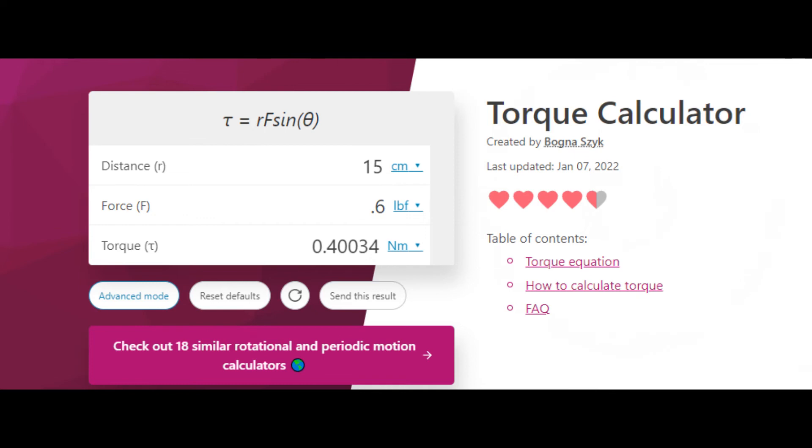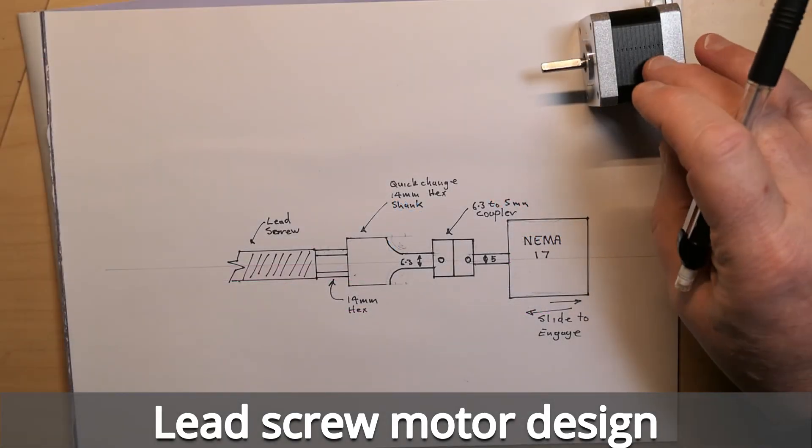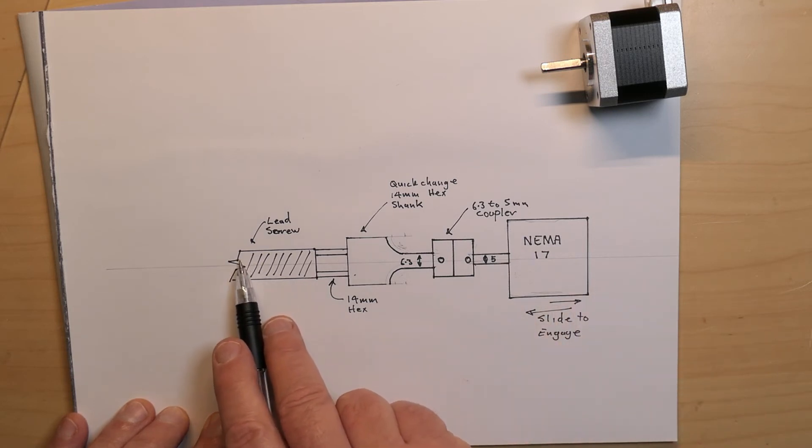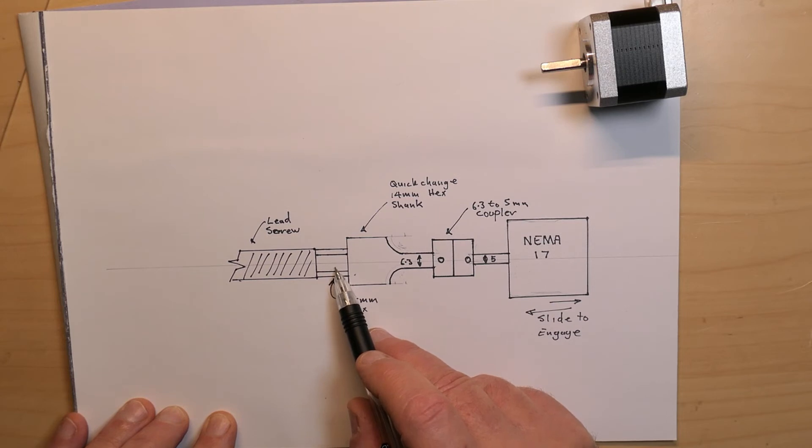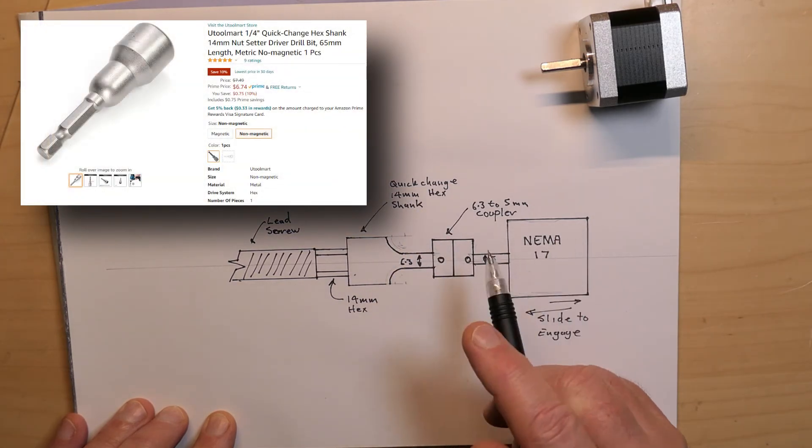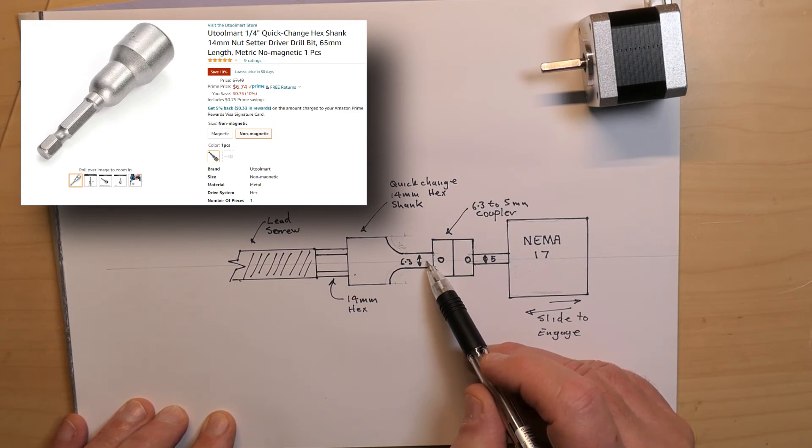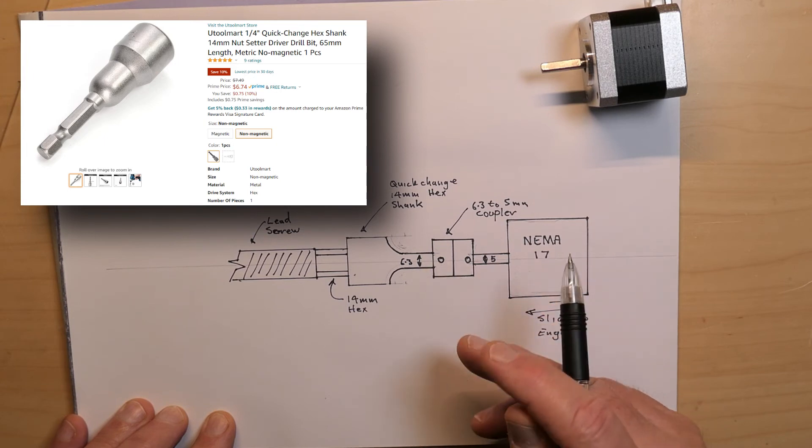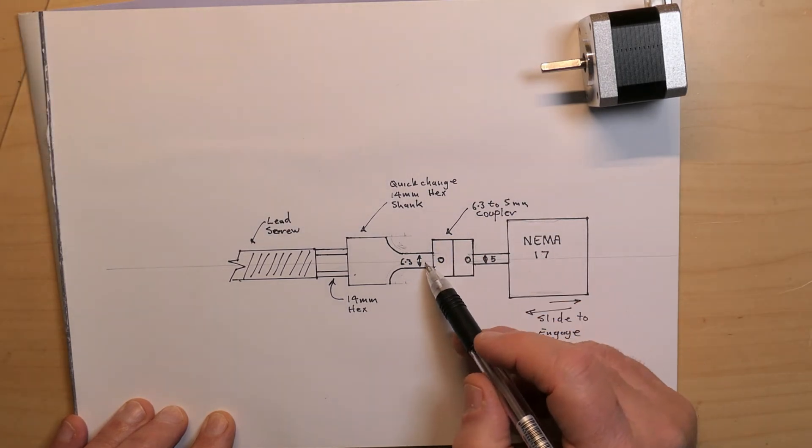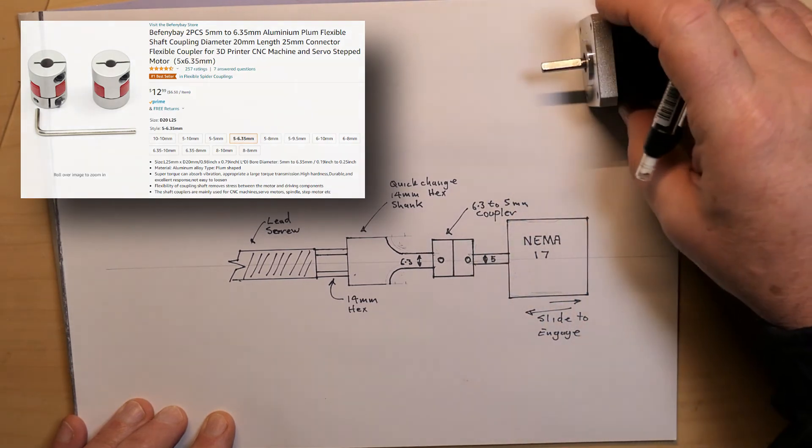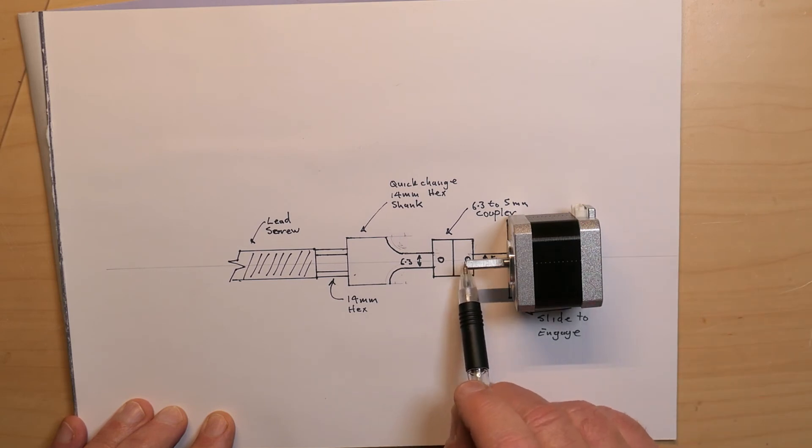Here's the plan for using the stepper motor to run the lead screw on my lathe. So this is kind of not-to-scale drawing I did of it. So this is the lead screw, so the threaded part here, and then on the end of the lead screw is a hex nut that's 14 millimeters. So I thought I can couple to that using a quick change 14 millimeter hex shank, and I'll show you a picture of that on Amazon. And that has a 6.3 millimeter hex shaft on it, or quarter inch shaft on it. I'll be able to use the lathe to turn that down to make it a circular rather than a hex. And I'll use that to go into a coupler that will go from 6.3 millimeters down to 5 millimeter coupler, which is the diameter on the motor here.